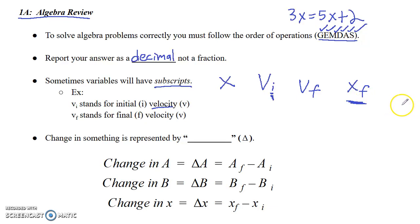And the last idea about algebra is when you see the change in something, and we're going to be looking at changes in a lot of different things, that can be represented by a symbol, and that symbol is called delta. So this is the symbol, it's a triangle. This triangle is delta, that stands for the change in something, and it could be the change in anything.